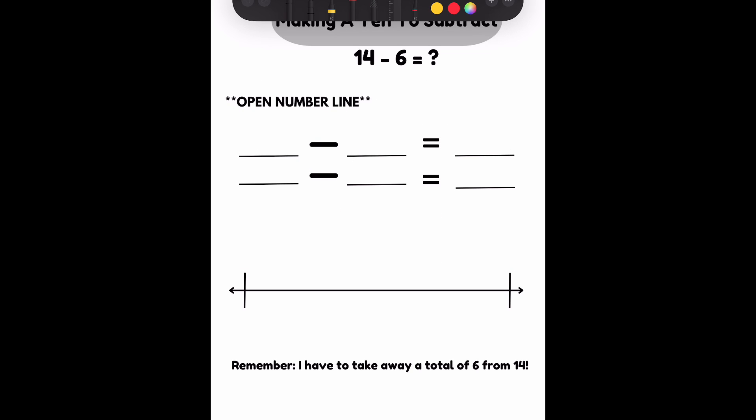With the open number line, we have to remember to take away a total of 6 from 14. So I need to end at 14. And work my way backwards. And we're making a 10. So I know my next jump will be to 10. I need to figure out how many backwards I went. If I were to count backwards, I would go back 4.